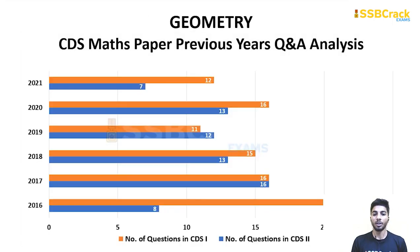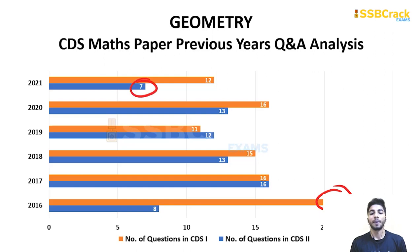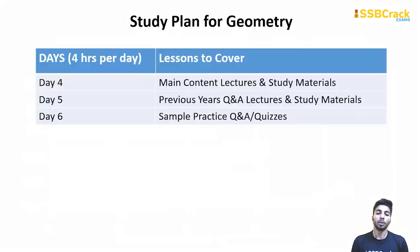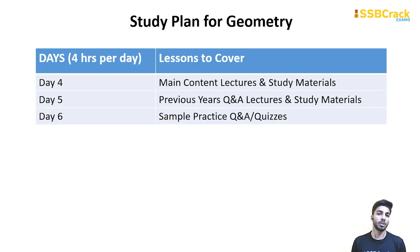The next topic is Geometry. The maximum number of questions asked is 21 and the minimum is 7. This is also a scoring topic. You have to cover it from Day 4 to Day 6: main content on Day 4, previous year questions on Day 5, then sample practice and quizzes on Day 6. Four hours per day.